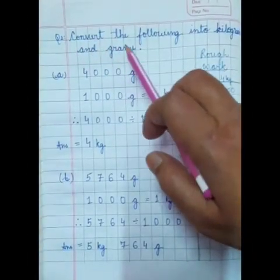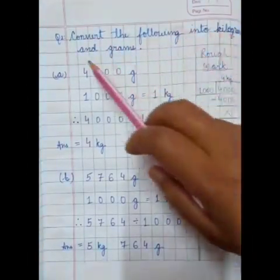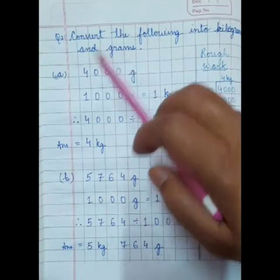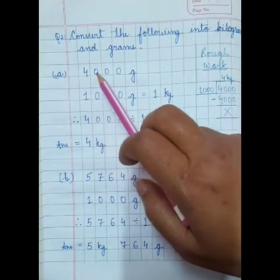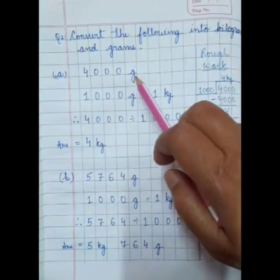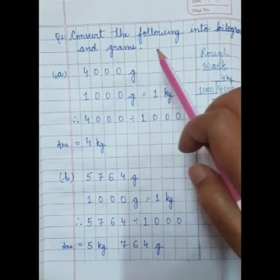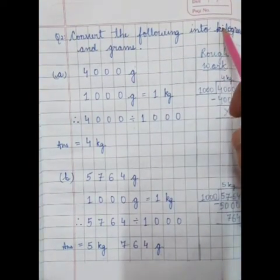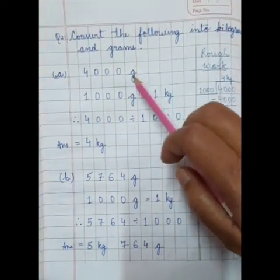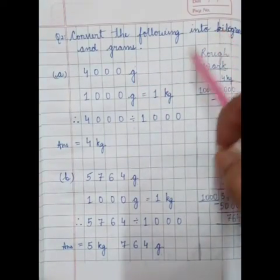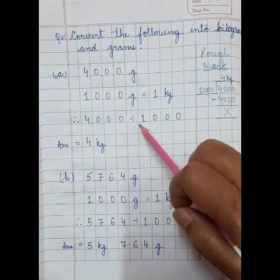Question 2: Convert the following into kilogram and gram. A part is 4000 gram. Here, we have to change gram into kg. For changing gram into kg, we will divide.